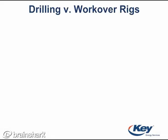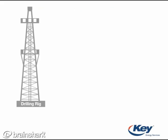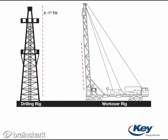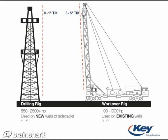Now let's compare some of the basics of drilling and workover rigs. Drilling rigs are set up almost completely straight into the sky with only 0 to 1 degrees of tilt. Workover rigs are set up at a slight angle of 3 to 5 degrees. Drilling rigs also have much more strength, with horsepower that could triple or more the horsepower of a workover rig. While drilling and workover rigs can be used on the same wells, they're needed at different times.